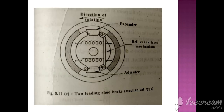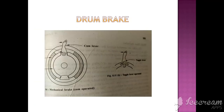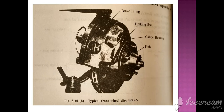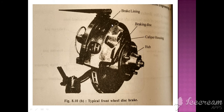Just looking again at disc brakes — various configurations. Here you can see the cam-operated drum brake. Here is how it looks in real life. This is the disc — this is the rotating ventilated disc. Shown here is the ventilated caliper and this is the hub and brake landing.